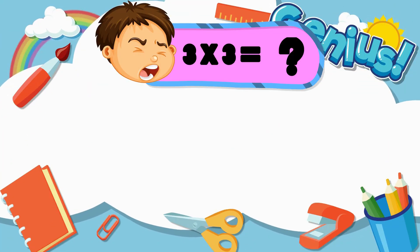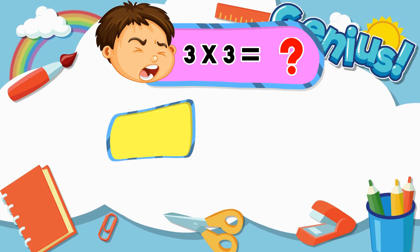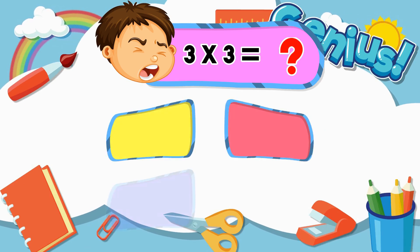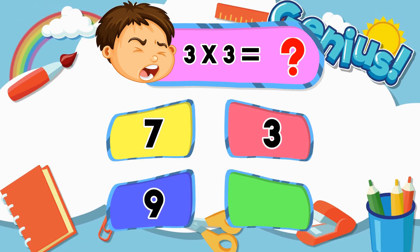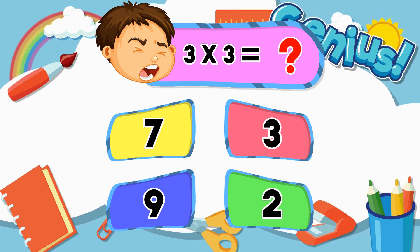What is 3 times 3? Options: 7, 3, 9, 2. Answer: 9.